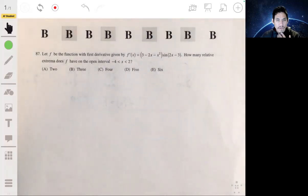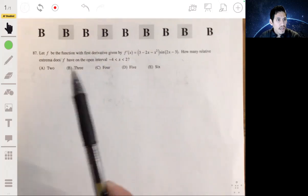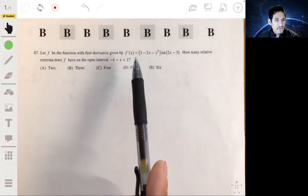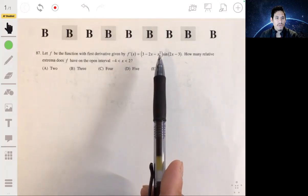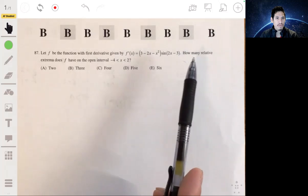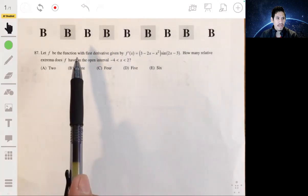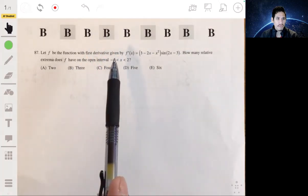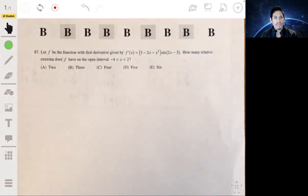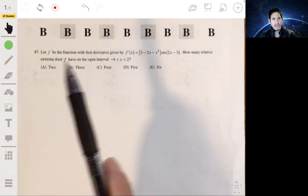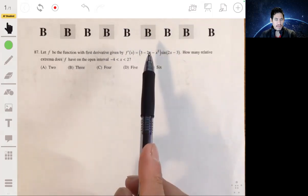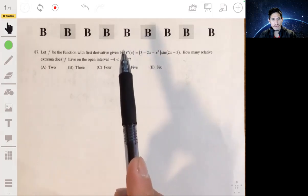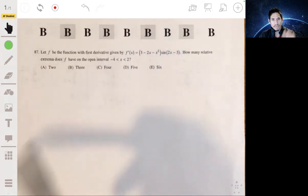All right, so for problem 87, we have this function f with the first derivative given here as 3 minus 2x minus x squared times sine of 2x minus 3. We have to find how many relative extrema does f have on the open interval from negative 4 to 2. The idea here is to see how many times the first derivative changes from being positive to negative or from negative to positive.